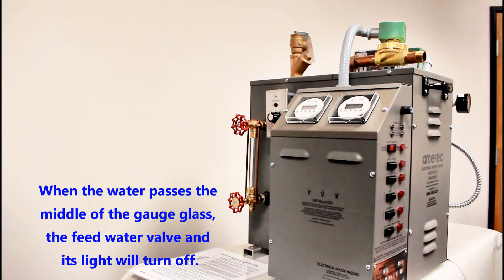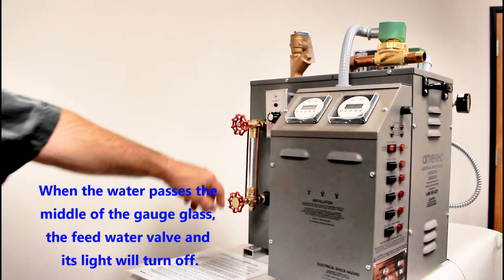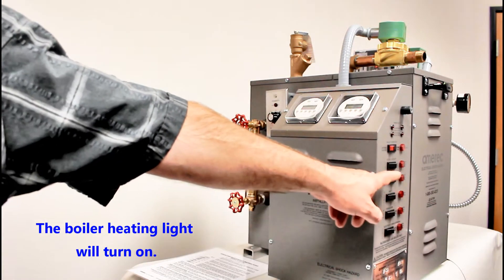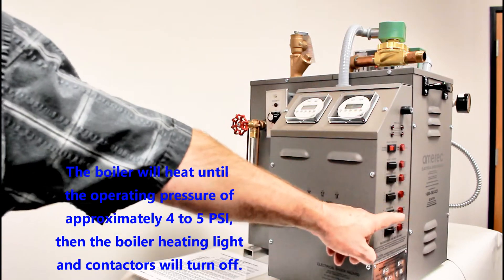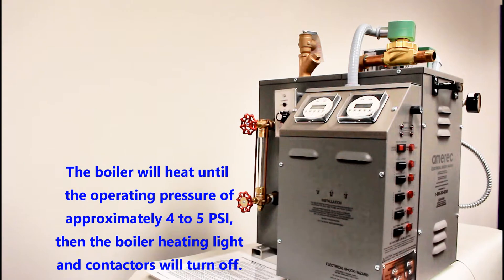When the water passes the middle of the gauge glass, the feed water valve and its light will turn off, the steam valve light will turn off, the boiler heating light will turn on. The boiler will heat until its operating pressure of approximately 4 to 5 psi, then the boiler heating light and contactors will turn off.